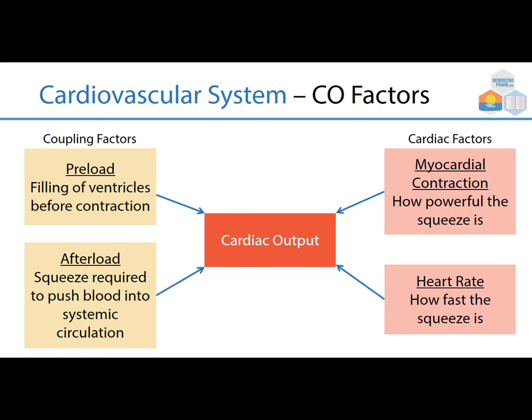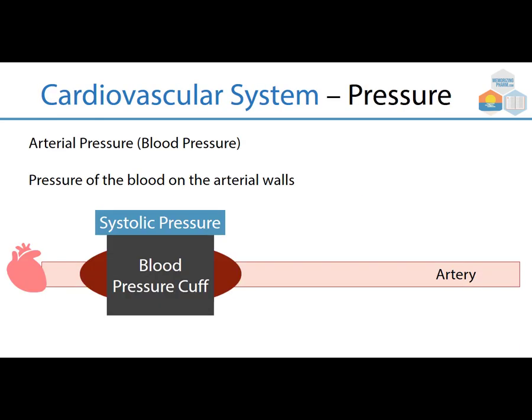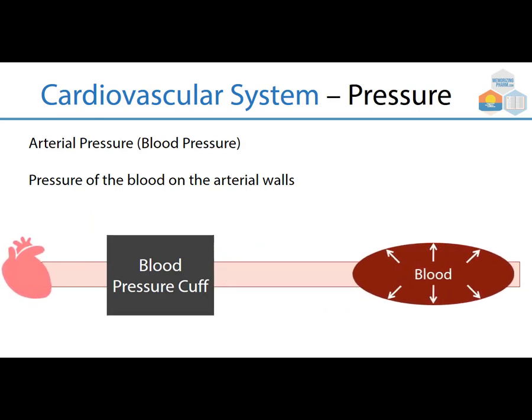Preload is filling the ventricles before contraction. Afterload is how much pressure it takes to get blood into the systemic circulation. Factors like fluid overload can increase the pressure needed. When thinking about arterial blood pressure, we divide it into systolic pressure versus diastolic pressure — systolic on top, diastolic on the bottom — which is what the blood pressure cuff measures.